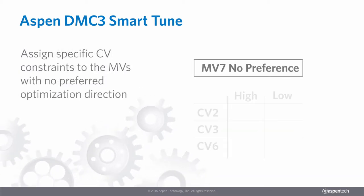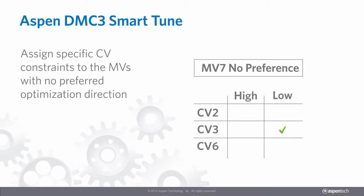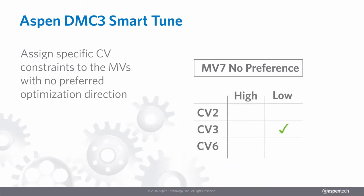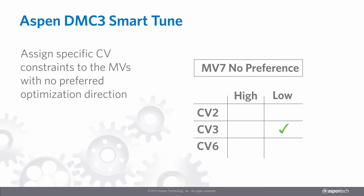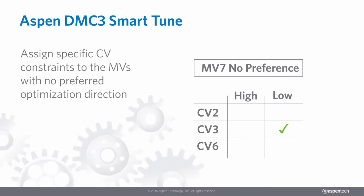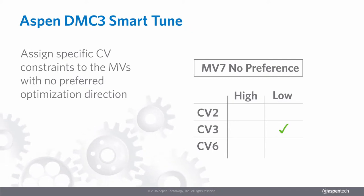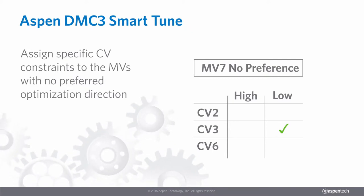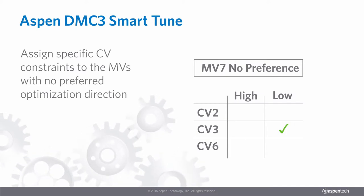The MVs that are not assigned an economic direction preference can be used for CV optimization. SmartTune gives users the option to run those MVs against the high or low limit for any CV with a relationship to that MV, degrees of freedom permitting. MVs that do not have economic preferences and are not assigned to any CVs are not moved in either direction during optimization.